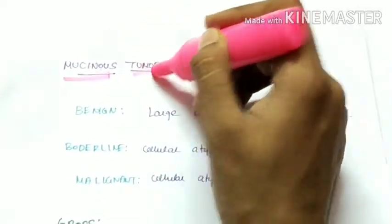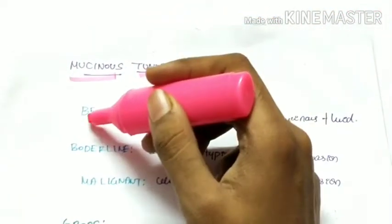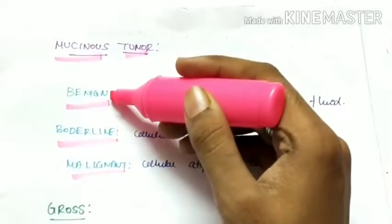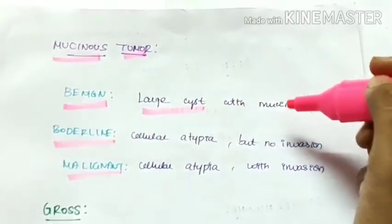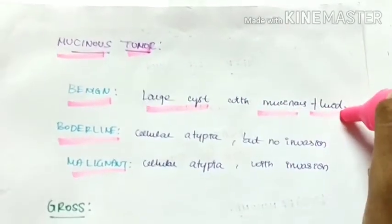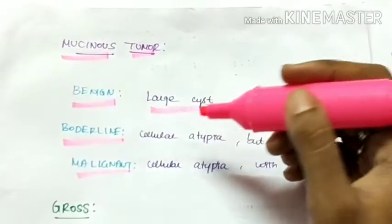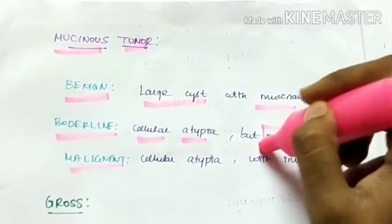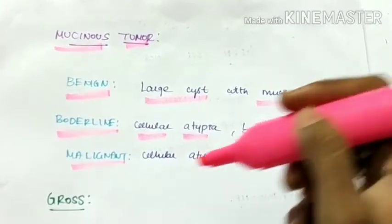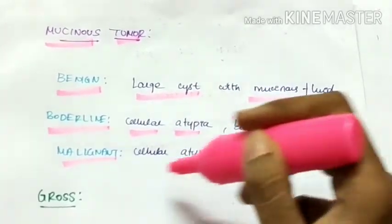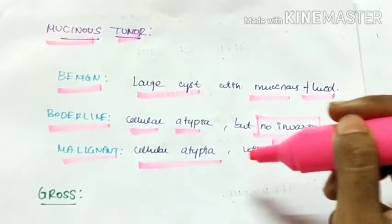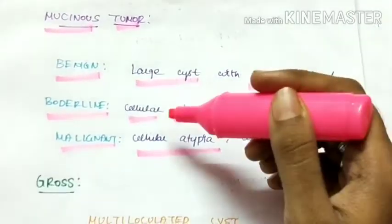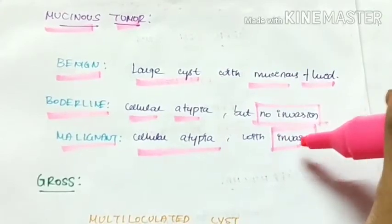Coming to the mucinous ovarian tumor. It can either be benign, borderline, or malignant. In benign mucinous tumor, it is a large cyst with mucinous fluid. In borderline, there is cellular atypia but there is no invasion. Whereas in malignant, there is invasion along with cellular atypia. The only difference between borderline and malignant is there is no invasion in borderline whereas there is invasion in malignant.